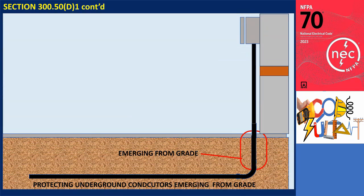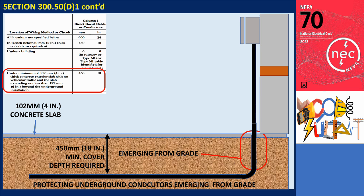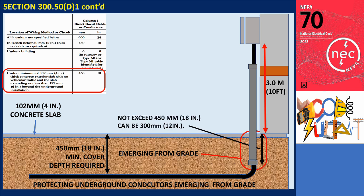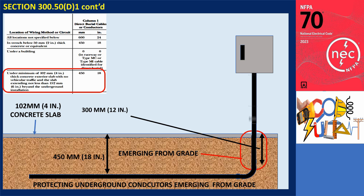Consider a direct buried cable installed under a concrete slab that is 102 millimeters (4 inches) thick. According to Table 300.5(A), the minimum cover requirement is 450 millimeters. If the equipment to which this cable will connect is 3.0 meters (10 feet) high, Section 300.5(D.1) states that the protection below the finished grade should not exceed 450 millimeters (18 inches). Therefore, the protection could be set at 300 millimeters (12 inches). For the above-grade protection, since the equipment height is 2.5 meters (8 feet), the protection can extend all the way to the equipment. If the equipment height is less than 2.5 meters (8 feet), the protection will, of course, extend all the way to the equipment.